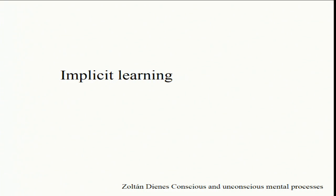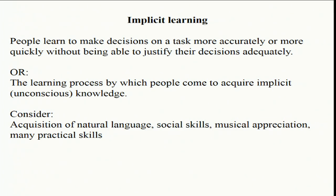This week and next we turn our attention to implicit learning, which you could define in a relatively neutral way as: you learn to get better. Maybe you make better decisions or you just get faster, but you find it hard to adequately justify why the decisions are right, to explain how you're making decisions or what you've learned.